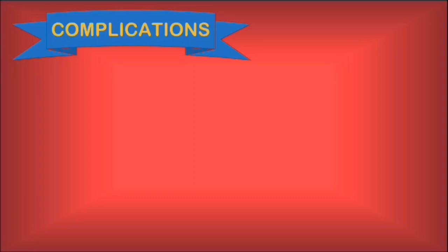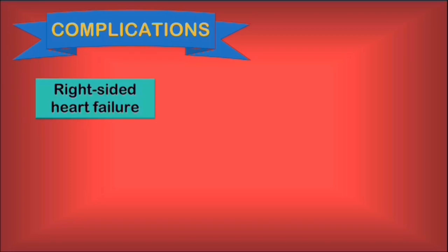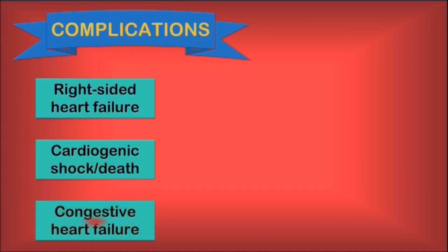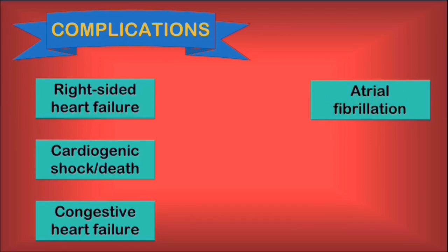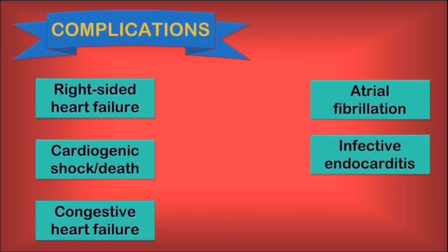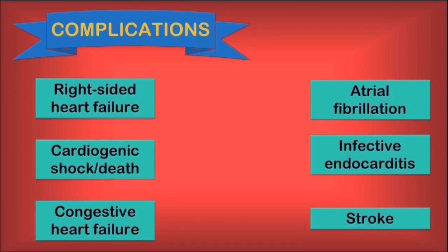Up next, we discuss the complications of mitral stenosis. The extra effort the right ventricle has to make will eventually overwhelm the heart, leading to right-sided heart failure. Also, on the left side, reduced stroke volume and cardiac output increase the risk for congestive heart failure and even cardiogenic shock with tissue hypoperfusion and death. AFib is an arrhythmia induced by the left atrial enlargement. Because the malformations of the mitral leaflets leave them vulnerable to infection and the formation of vegetations, infective endocarditis is also a possible complication. Finally, the pooling of blood in the left atrium increases the likelihood of thrombus formation and the risk of embolization in the cerebral circulation, leading to stroke.